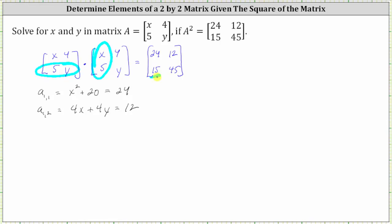And the result must be 15. So five times x is five x plus y times five is five y. This must equal 15.